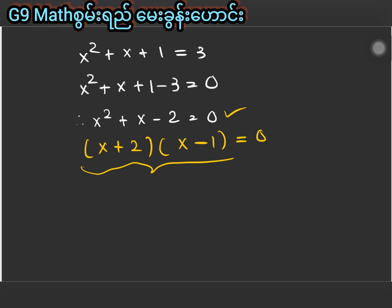We get x plus two equal zero or x minus one equal zero, so x equals negative two or x equals one.